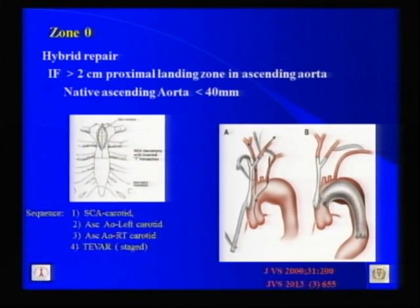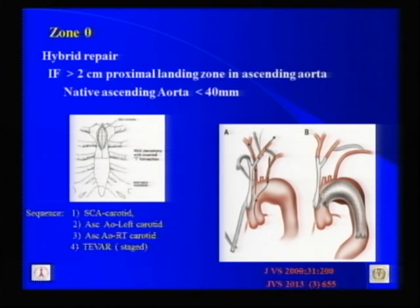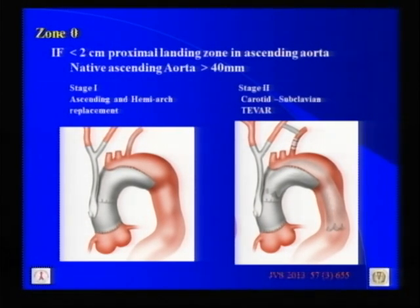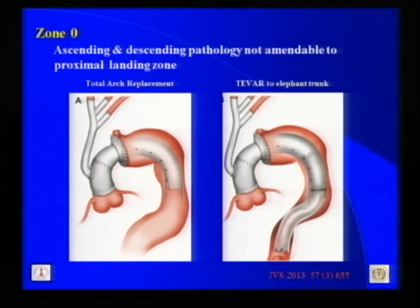Today our approach depends on anatomy. If there is more than two centimeters of proximal landing zone in the ascending aorta and the diameter is less than 40 mm, we proceed with a minimally invasive minimal sternotomy, then perform subclavian-to-carotid bypass, ascending to left carotid, and ascending to right carotid in sequence, followed by a TEVAR stage — as published recently by the Duke group in JVS. If the proximal zone is less than two centimeters and the ascending aorta is 40 mm or more, a hemi-arch replacement must be performed first, then a staged carotid-subclavian bypass and TEVAR. When ascending and descending pathology leaves no zone for proximal landing, total arch replacement is indicated, leaving an elephant trunk that can subsequently be bridged with a TEVAR device.